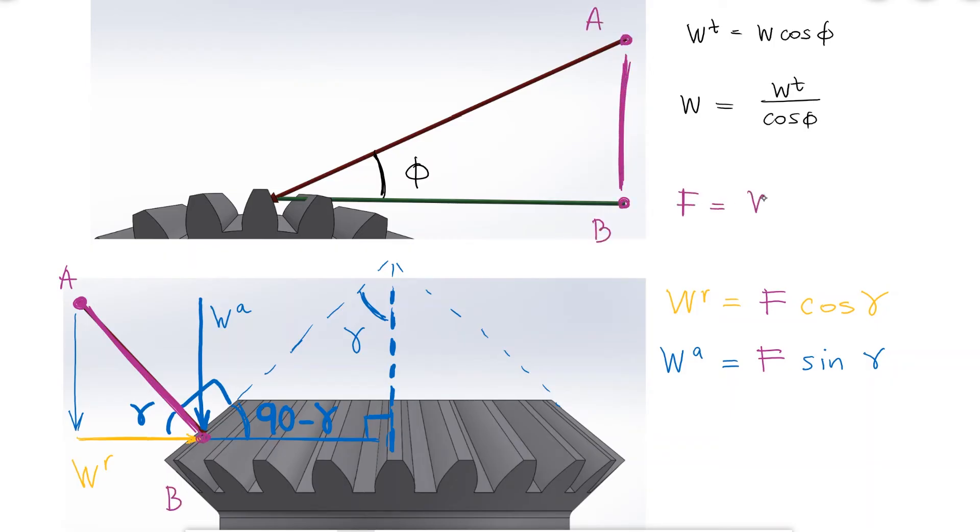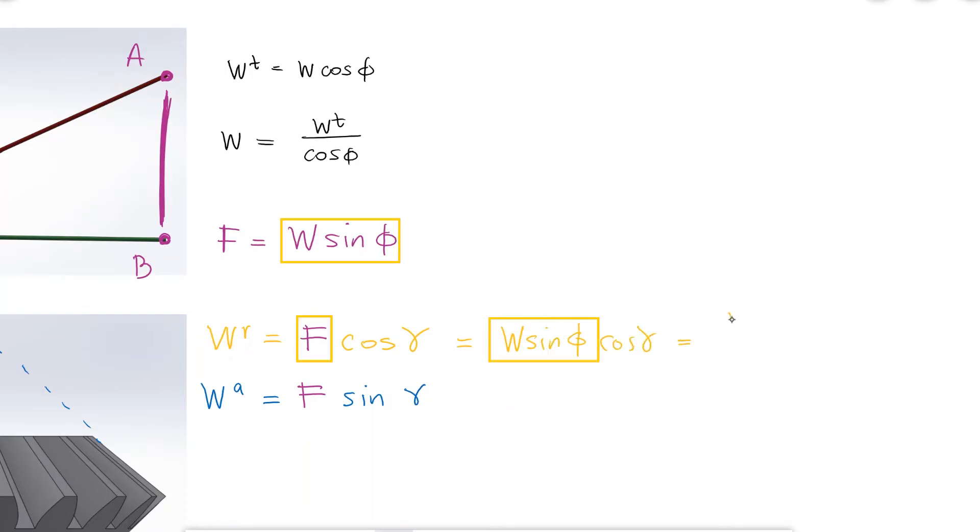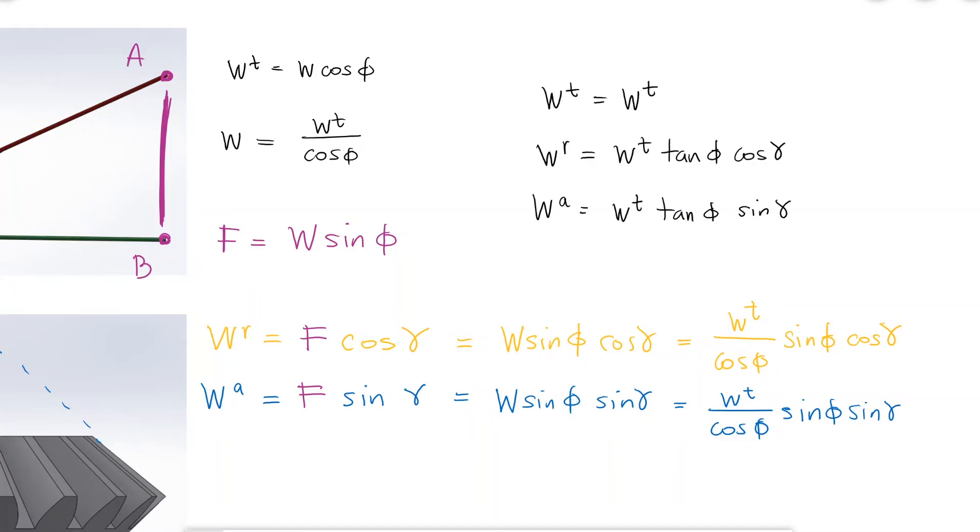And this is all we need, the radial component can be written by substituting f and then w, and the axial component exactly the same way. Simplifying the trigonometric functions, I can find the three expressions for each one of the components.